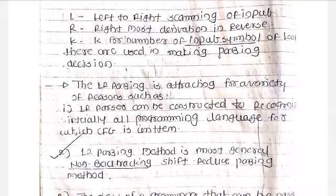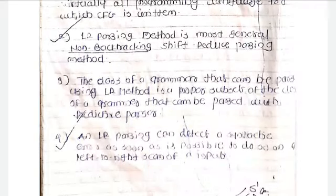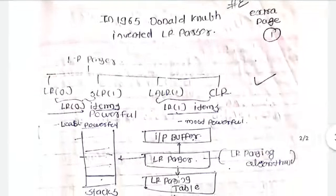LR parsing is attractive for a variety of reasons. LR parsers can be constructed to recognize virtually all programming language constructs defined by context-free grammars. LR parsing is a general non-backtracking shift-reduce parsing method. The class of grammars that can be parsed using the LR method is a proper subset of the grammars that can be parsed with a predictive parser. LR parsing can detect syntactic errors, which are handled by an error handler.